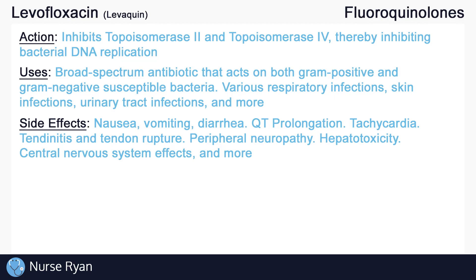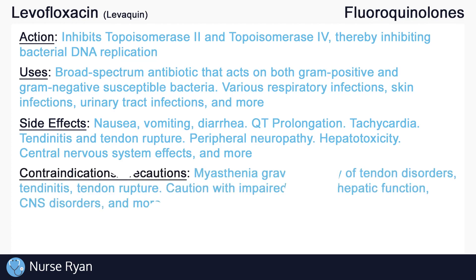So what are some of the contraindications and precautions? Fluoroquinolones should be avoided in those with myasthenia gravis, as fluoroquinolones may exacerbate muscle weakness in this population. Also avoid fluoroquinolones in those who have a history of tendon disorders or those who have experienced tendonitis or tendon rupture. Patients who are above 60 years old, patients taking corticosteroids, and patients with heart, kidney, or lung transplants have an increased risk for tendonitis or tendon rupture. Use cautiously in those with impaired renal or hepatic function, those with CNS disorders, and more.